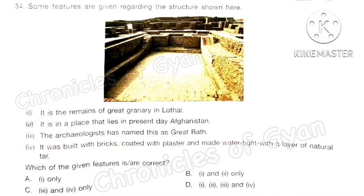Question 34: Some features are given regarding the structure shown. This image is of the Great Bath, located in Sindh, Pakistan. Statement 1 — it is the remains of the Great Granary in Lothal — is incorrect. Statement 2 — it is in a place that lies in present-day Afghanistan — is incorrect. Statement 3 — archaeologists have named this the Great Bath — is correct. Statement 4 — it was built with bricks coated with plaster and made watertight with a layer of natural tar — is correct. So the correct option is option C.